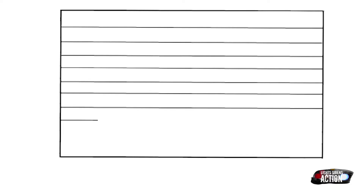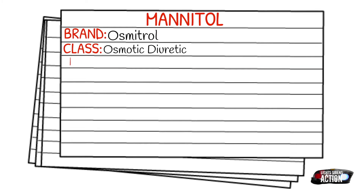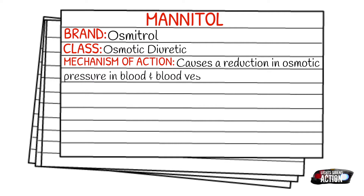Today's medication is called Mannitol, also known by its brand name Osmotrol. Mannitol falls under the class of osmotic diuretics. The mechanism of action is that it causes a reduction in the osmotic pressure in the blood and blood vessels. This inhibits the reabsorption of water and electrolytes and also increases urine output. It also causes renal dilation, so it will increase the blood flow to the kidneys.